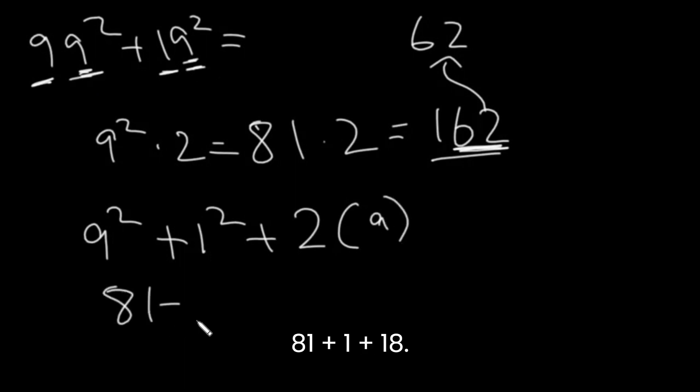So we have 81 plus 1 plus 18. This will be 82 plus 18, which is 100.